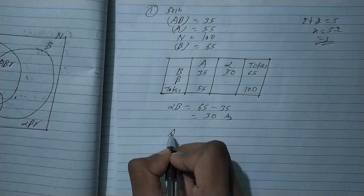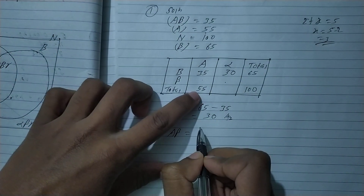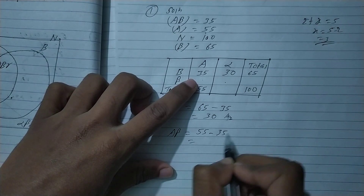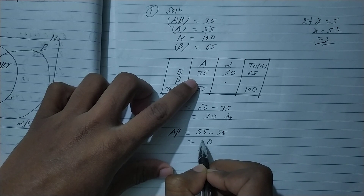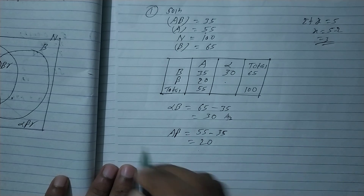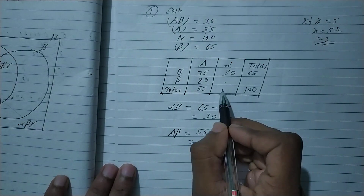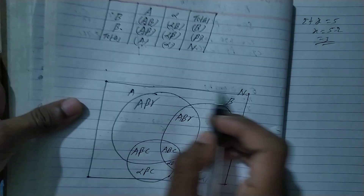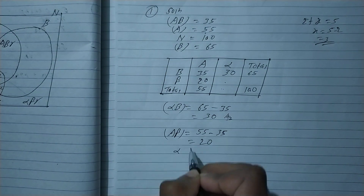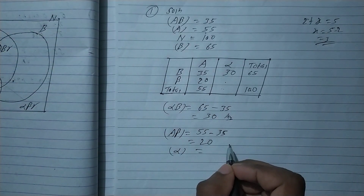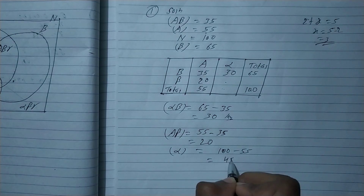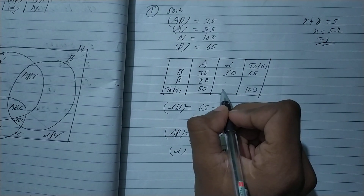A Beta: this means A is 55 minus 35, so 5 minus 5 is 0 and 5 minus 3 is 2 — so this is 20. Alpha is 100 minus 55, so the answer is 45.